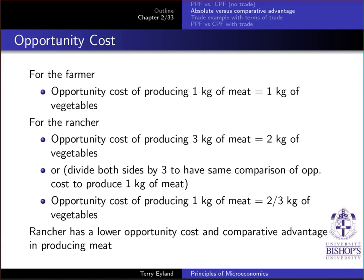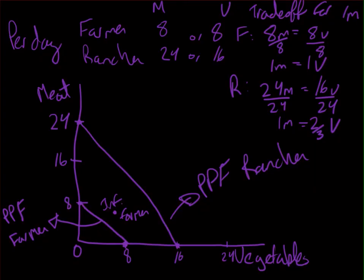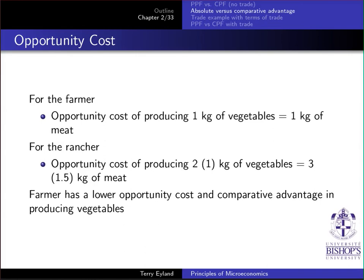I invite you to pause and calculate the opportunity cost of producing one unit of vegetables for both the farmer and the rancher. Working through it: for the farmer, the opportunity cost of one kilogram of vegetables is one kilogram of meat. For the rancher, it is one and a half kilograms of meat. Therefore, the farmer has a lower opportunity cost and has comparative advantage in producing vegetables.